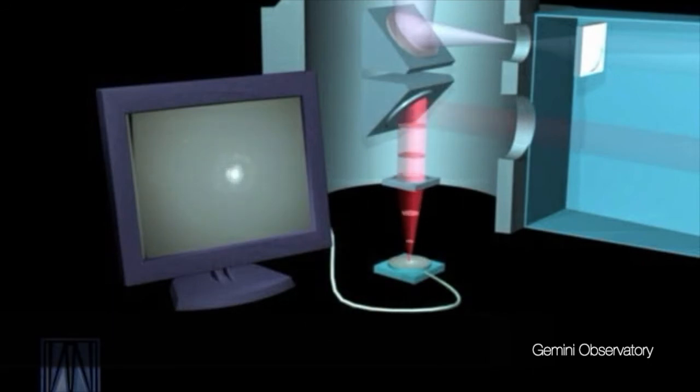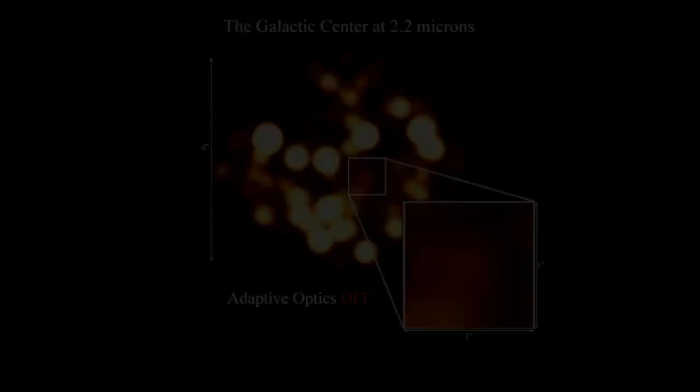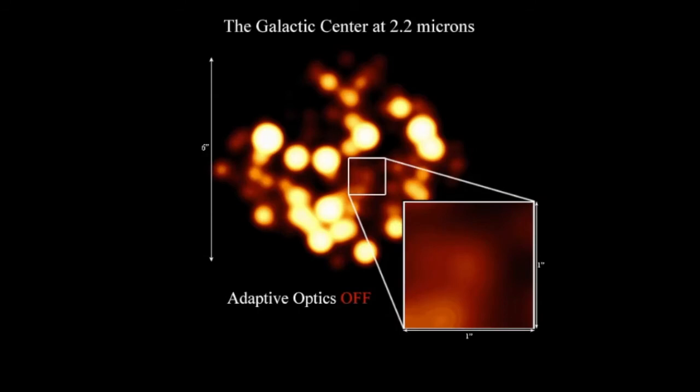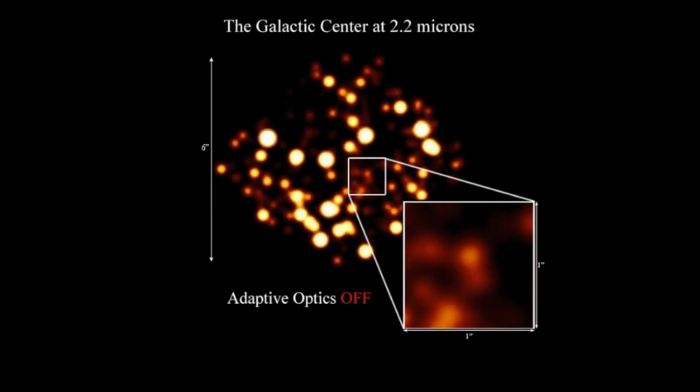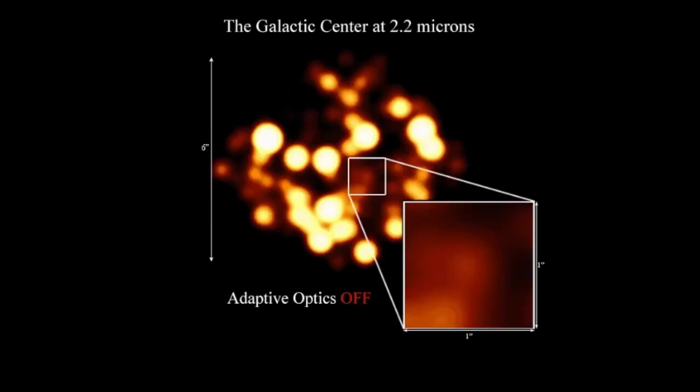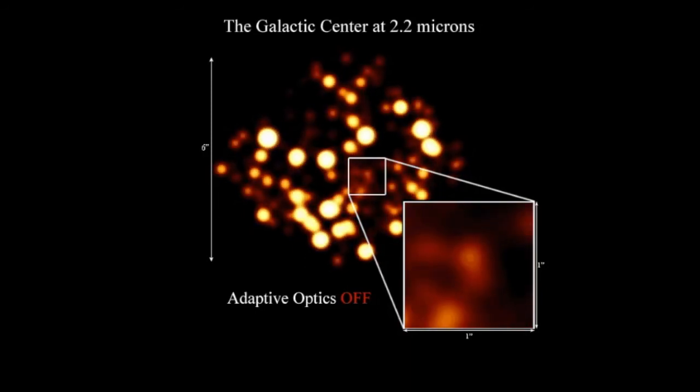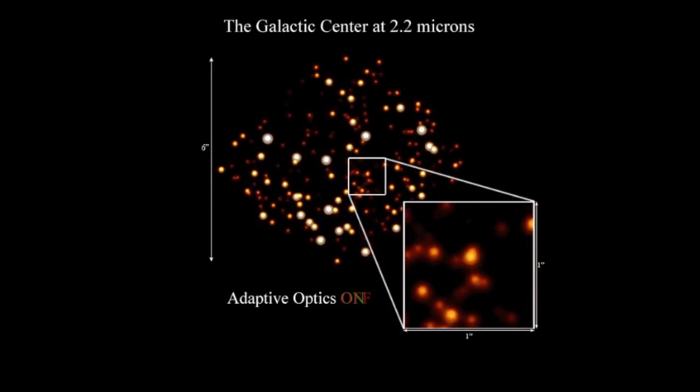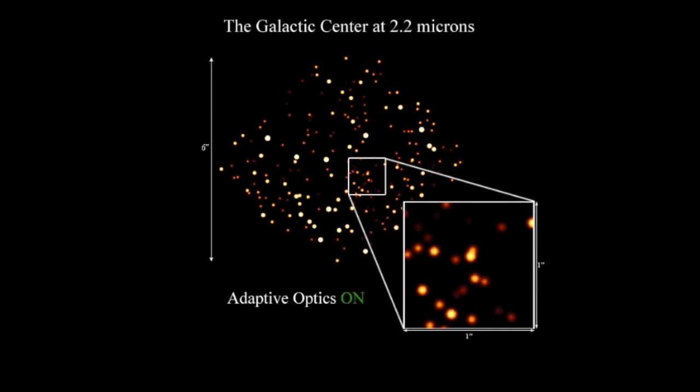We show here the difference between the image of the galactic center without and with the adaptive optics turned on. The difference is crystal clear. Without the adaptive optics on, all you see is diffused light filling up the entire boxed region. The blurs from all stars are hopelessly overlapped. But once the adaptive optics is on, we can suddenly see individual stars clearly, including fainter ones that we previously had no idea were even there.